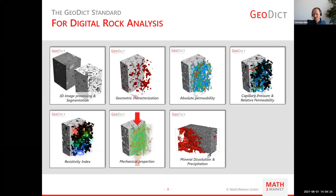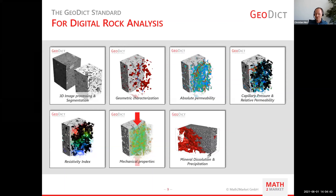The GeoDict standard for digital rock analysis covers the entire range of digital rock physics, starting with 3D image processing and segmentation of image scans and subsequent geometric characterization. Numerical solvers in GeoDict compute the absolute permeability, capillary pressure curve, relative permeability curve, resistivity index, mechanical properties, and mineral dissolution and precipitation.